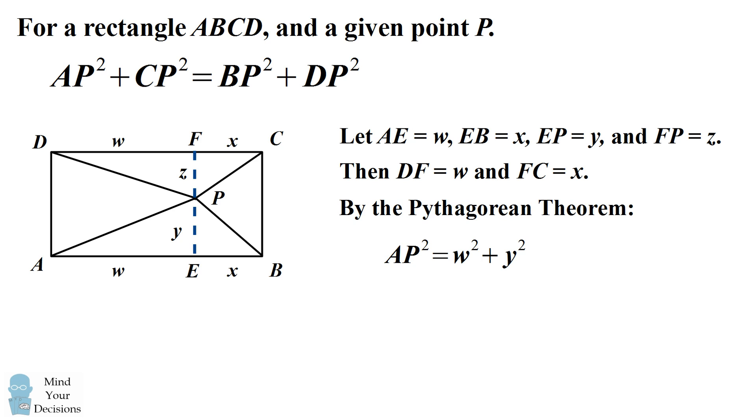AP squared will be equal to W squared plus Y squared. BP squared will be equal to X squared plus Y squared. CP squared will be equal to X squared plus Z squared, and then DP squared will be equal to W squared plus Z squared.